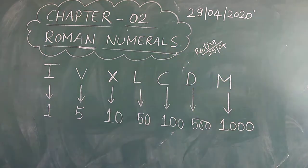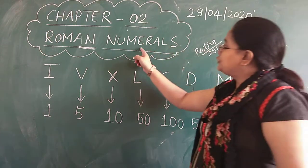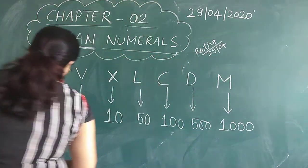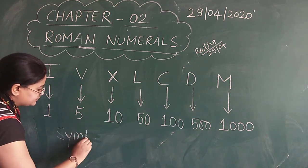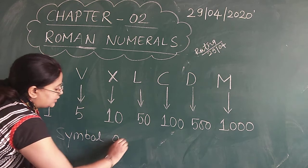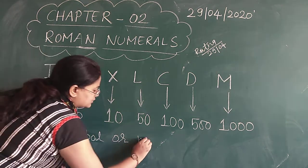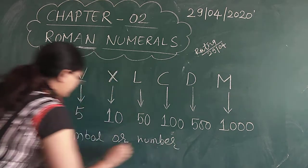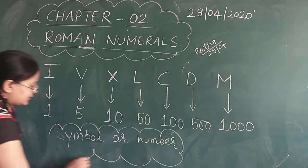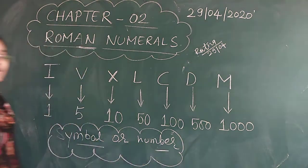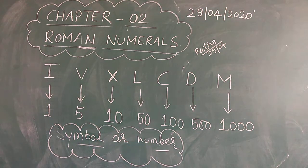Numerals means what? A numeral is a symbol. Numerals are a symbol or a number — a symbol which stands for a number, or represents a number.